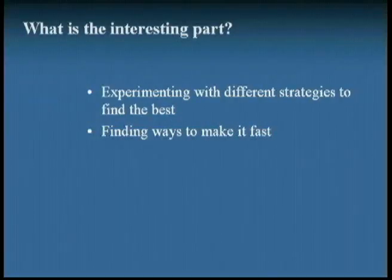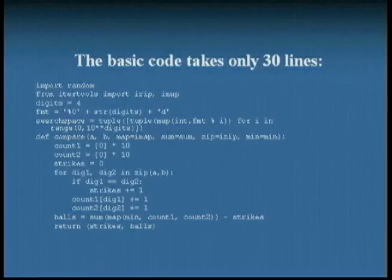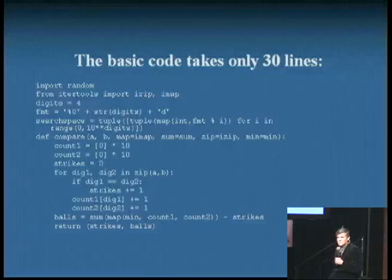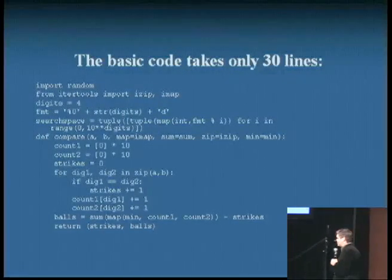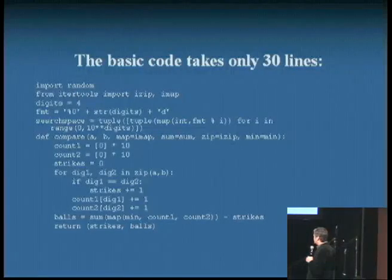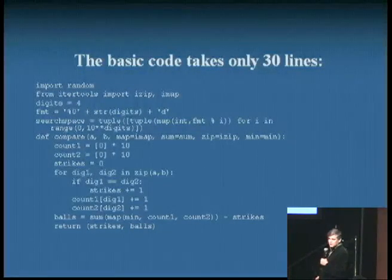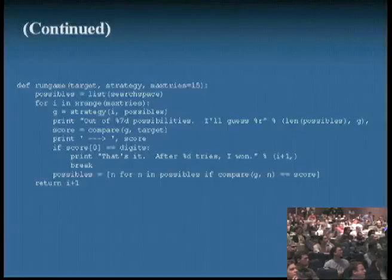There are many possible strategies to use for code breaking. Interesting part is experimenting with different strategies and seeing which ones work the best. It takes about 30 lines to write the whole thing. We're not going to spend a lot of time on this. The part that's hard for a kid to write is the comparison function, the part that does the scoring. I would give this part to them.